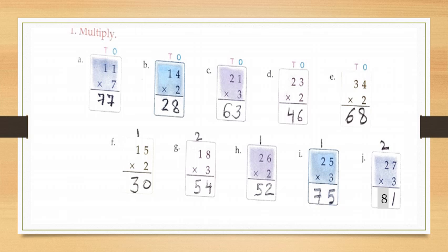Now J part: twenty seven multiply by three. First multiply the ones by three — that is seven into three is twenty one. Write one under ones and carry two tens. Now multiply the tens by three — that is two into three is six. Add two carry, so six plus two is eight. So children your answer will be eighty one.